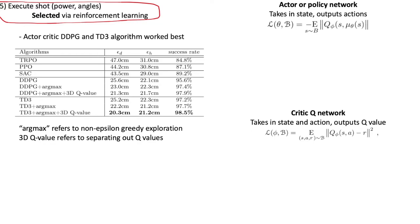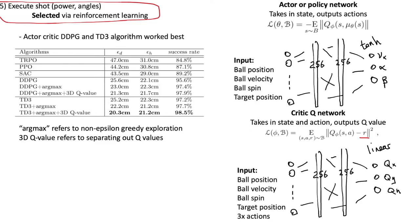The critic network takes in a state and action equation and outputs a Q value representing how good that state and action pairing is. Since this is a one-step problem, the Q value is actually just the expected reward and this is minimized with mean squared error. There's no bootstrapping using the Bellman equation like you usually see.